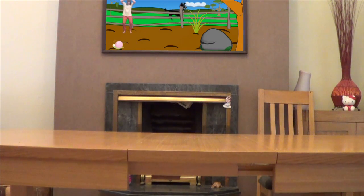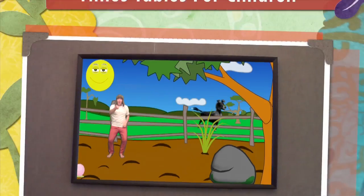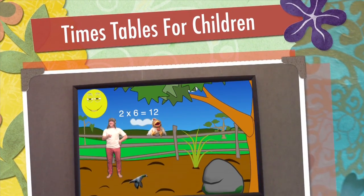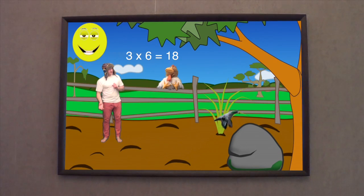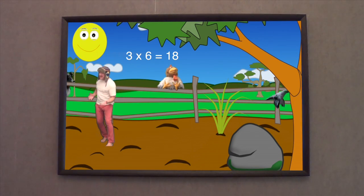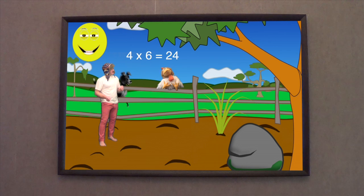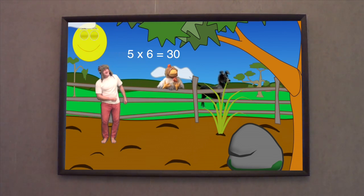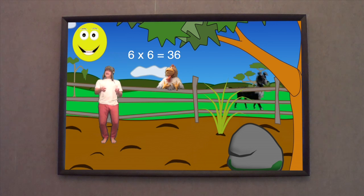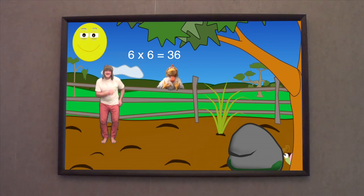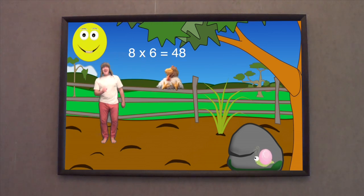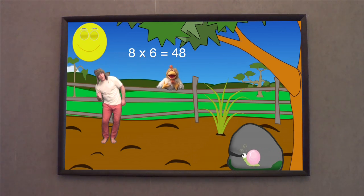Ok then, here we go! 1 x 6 is 6, 2 x 6 is 12, 3 x 6 is 18, 4 x 6 is 24, 5 x 6 is 30, 6 x 6 is 36, 7 x 6 is 42, 8 x 6 is 48.